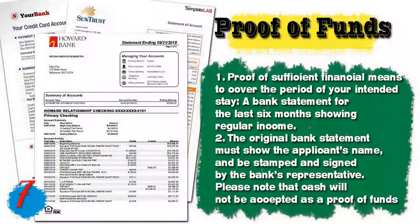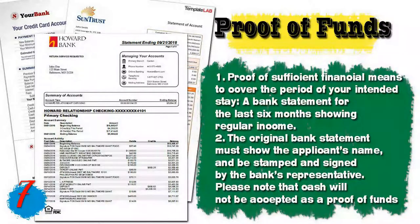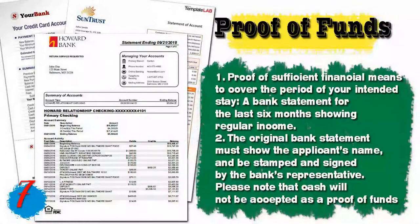Seventh, you will need proof of funds — sufficient financial means to cover the period of your intended stay. A bank statement for the last six months showing regular income is required. The original bank statement must show the applicant's name and be stamped and signed by the bank's representative. Please note that cash will not be accepted as proof of funds. If you don't have a bank account, proof of any assets can also be presented.